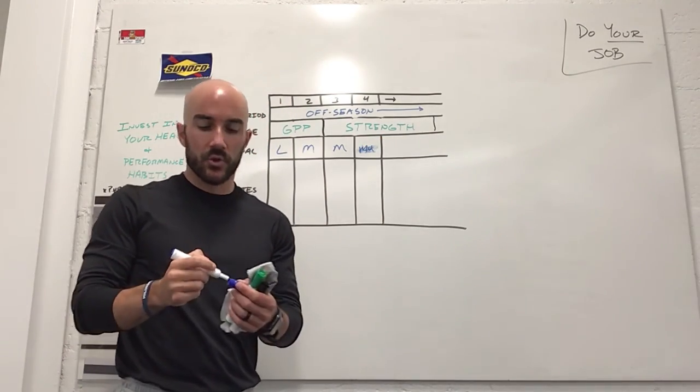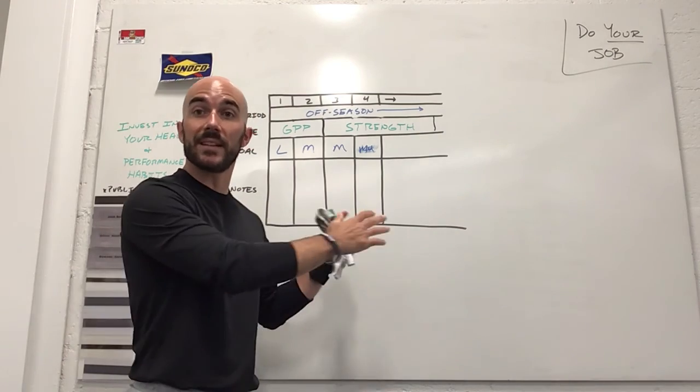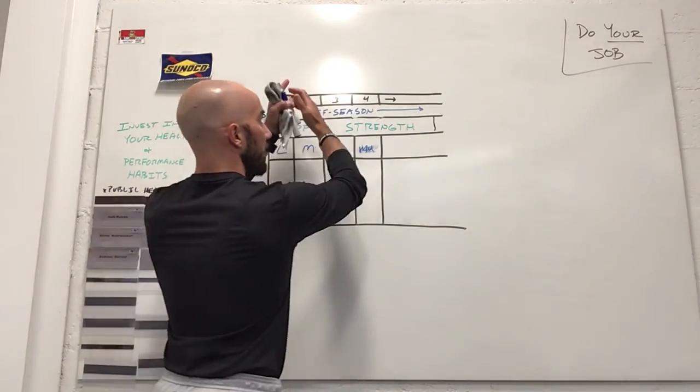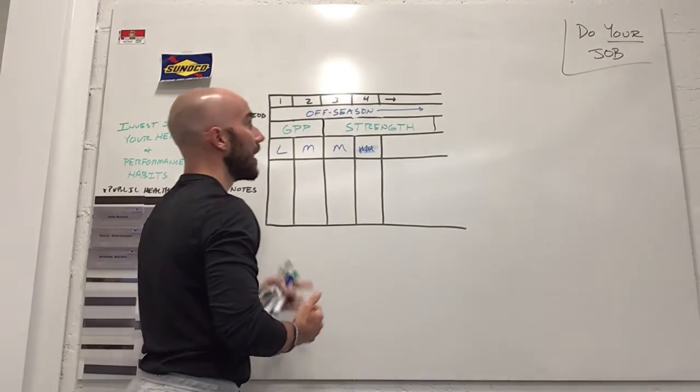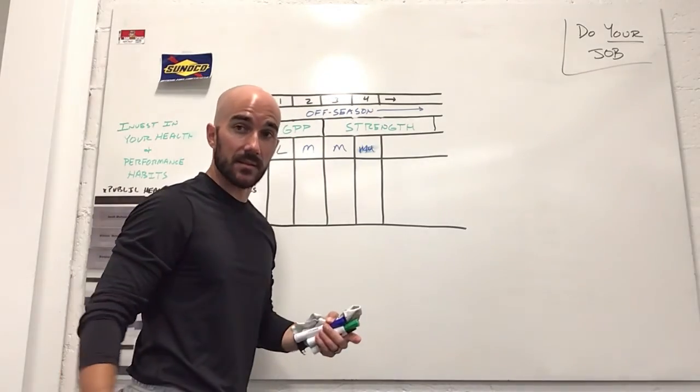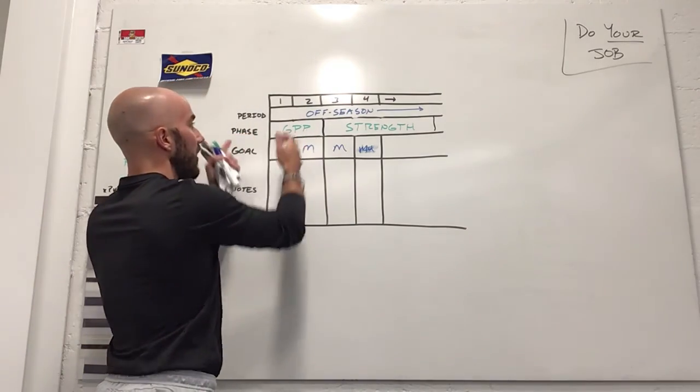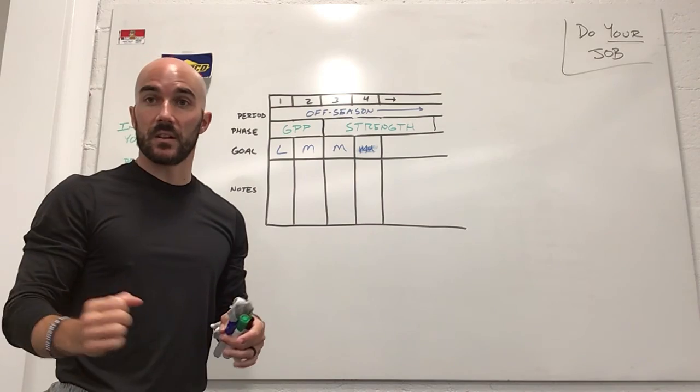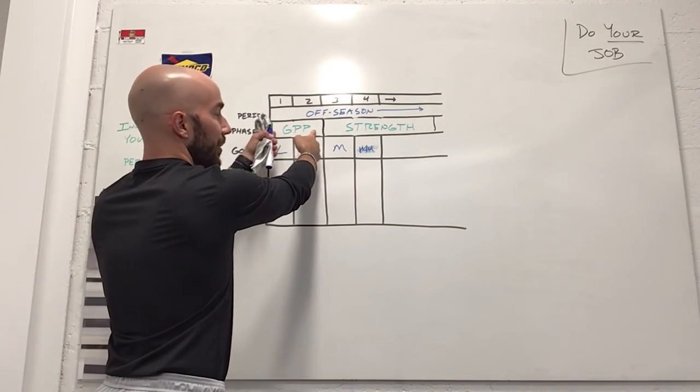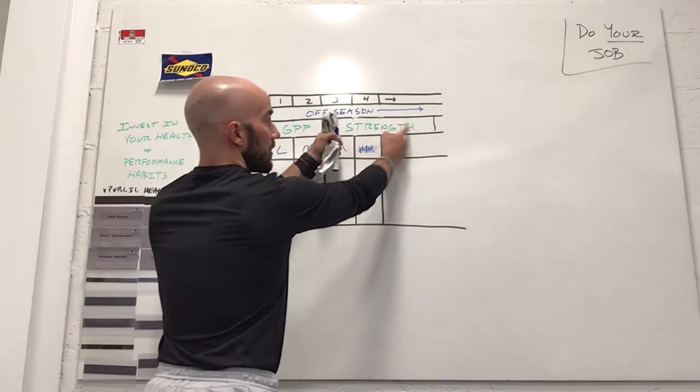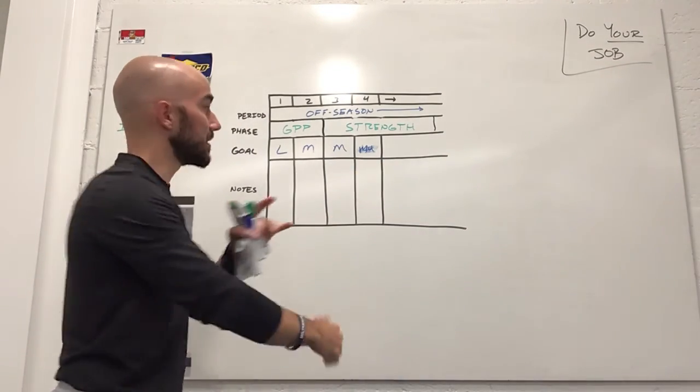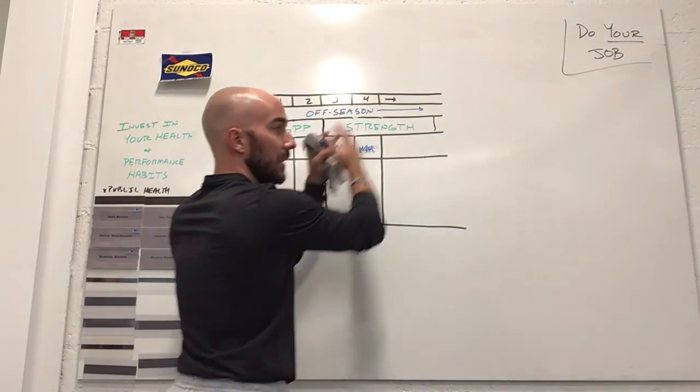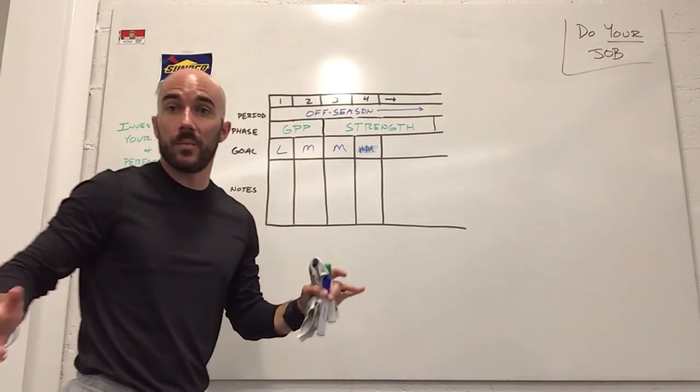In summary, what we're looking at is we're thinking big, broad scale. I'm in the off-season phase. The next stage, the phase, what are the specific directions I'm focusing on? General physical prep, then later on strength. Or if it's later in the off-season, maybe it's strength block first, then power block, then a transfer block, whatever it may be for your sport.